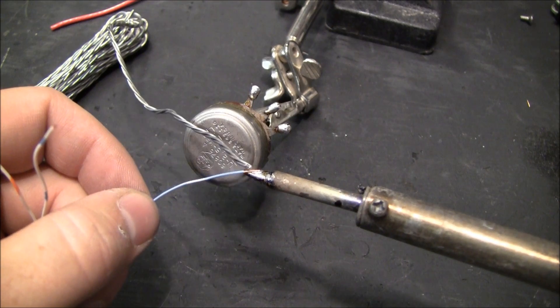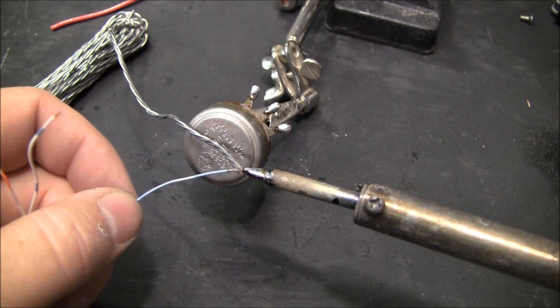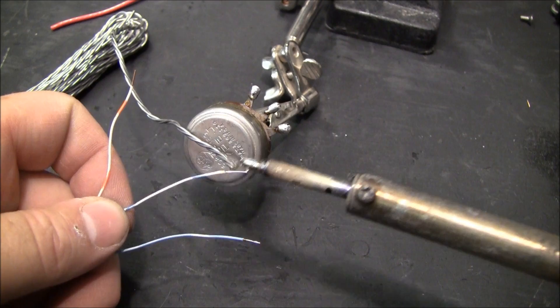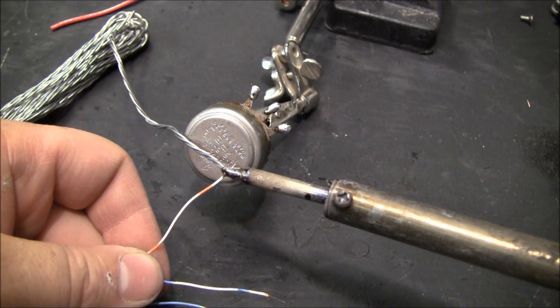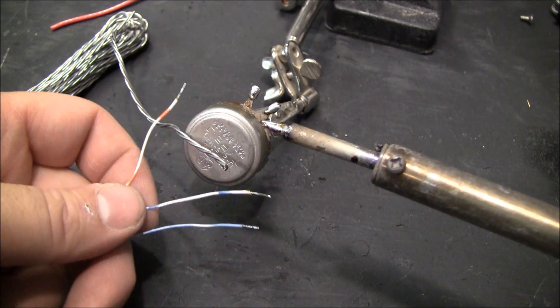If your iron isn't hot enough, you might have trouble getting the solder to tin on there right, so the temperature - having a good temperature on your iron - is important.